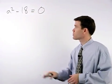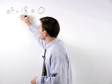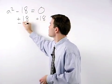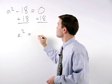Our first step in this problem is to get the a squared term by itself by adding eighteen to both sides. That gives us a squared equals eighteen.